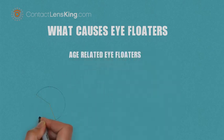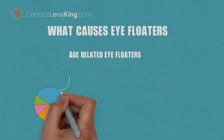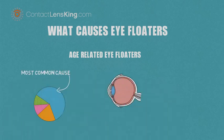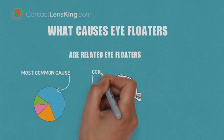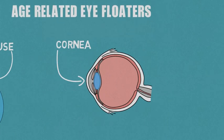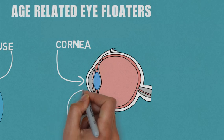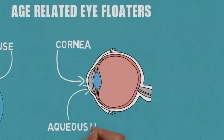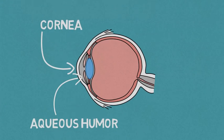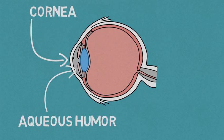Age-related eye floaters. This is the most common cause, where the fluid-like substance that fills the space behind your cornea can act as a pool for the cornea's normal recycling of cells. As these cells come off the internal tissues of the cornea and proceed to drainage, they sometimes float before they are drained.